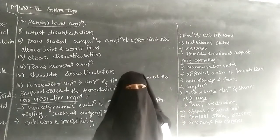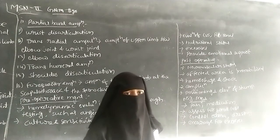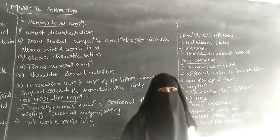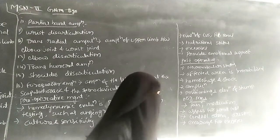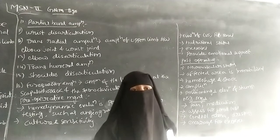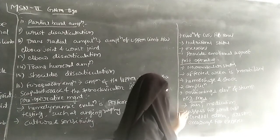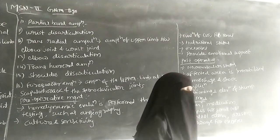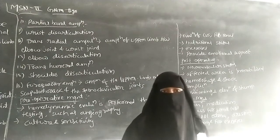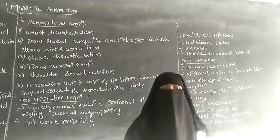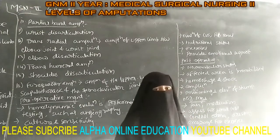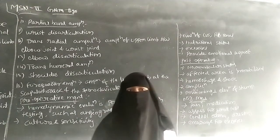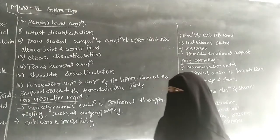Nursing management includes assessing the patient for pain and administering medications as prescribed by the physician to relieve pain. The nurse also assesses for blood loss at the surgical site, controls edema, and performs dressing while maintaining aseptic technique to prevent infection. The nurse should also encourage the patient to do exercises to improve muscle strength. This concludes the nursing management for amputation.